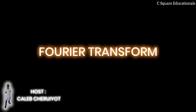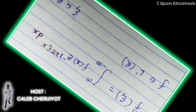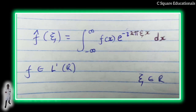The Fourier transform is an extension of the Fourier series, which in its most general form introduces the use of complex exponential functions. For a function f(x), the amplitude and phase of a frequency component at frequency n/P (n ∈ ℤ) is given by the complex number: c_n = (1/P) ∫_P f(x) e^(−i2πnx/P) dx. The transform of function f(x) is denoted by the complex number f̂(ψ), which is just one of several common conventions. Following the above equation for all values of ψ produces the frequency domain function.